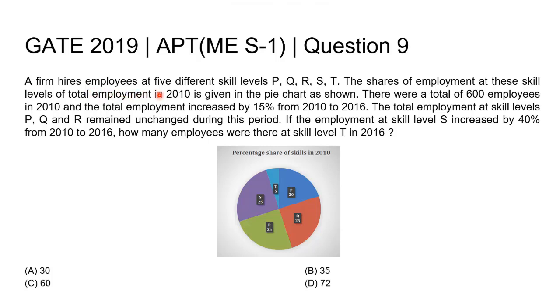A firm hires employees at five different skill levels P, Q, R, S, and T. The shares of employment at these skill levels of total employment in 2010 is given in the pie chart as shown here. There were a total of 600 employees in 2010 and the total employment increased by 15% from 2010 to 2016. The total employment at skill levels P, Q, and R remained unchanged during this period. If the employment at skill level S increased by 40% from 2010 to 2016, how many employees were there at skill level T in 2016?